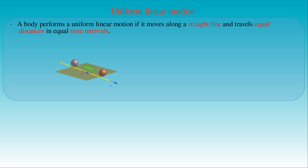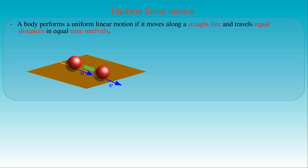On the left-hand side we can see a ball moving with a constant speed along a straight line over a surface. On the right-hand side, the path of the ball is shown with the velocity vectors of the ball in two different points along the path.